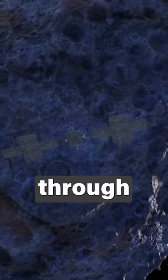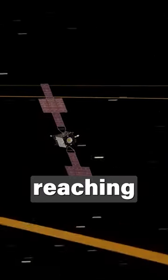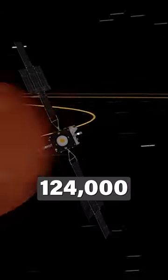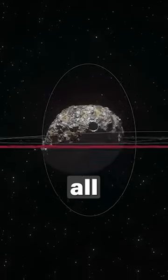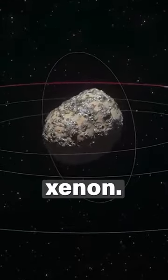It is plenty to zoom Psyche through space, as it can keep this pressure up. It adds up, eventually reaching speeds of over 200,000 kilometers or 124,000 miles per hour, all with just 922 kilograms or 2030 pounds of xenon.